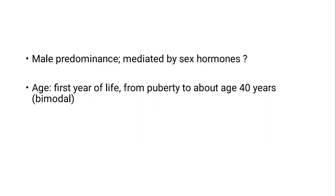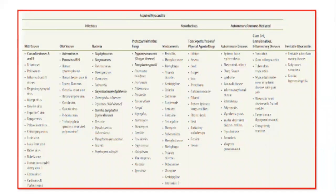Myocarditis is a heterogeneous disease with a very long list of etiologies ranging from infectious causes, non-infectious causes, or autoimmune. By far, viral myocarditis is the most common identified cause of myocarditis. We will discuss this extensively.